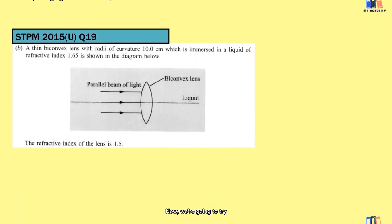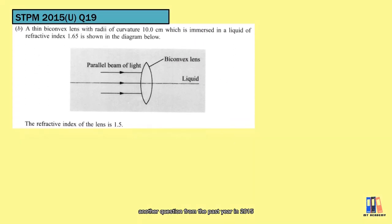Now, we are going to try another question from the past year in 2015. This is quite special where we have a biconvex lens immersed in a liquid of refractive index 1.65, which is higher than the refractive index of the lens. As we know that biconvex lens should be a converging lens, but let's do the calculation.